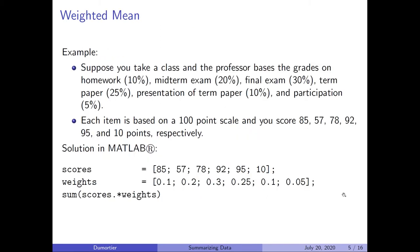Suppose you take a class and the professor bases grades on homework, midterm exam, a final exam, a term paper, a presentation, and participation. The homework is worth 10% of your grade, midterm exam is 20%, and so on. Suppose you have scores of 85, 57, 78, 92, 95, and 10 in those categories respectively. You can then use MATLAB to calculate your weighted mean.